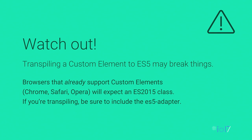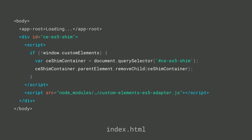One potential foot gun: if you're transpiling your custom elements down to ES5, browsers that natively support custom elements — like Chrome, Opera, and Safari — expect a custom element to be an ES2015 class. Giving them an ES5 object will actually break. So if you're transpiling your entire application and loading it in a browser with native support, you need to include a little ES5 shim. In our project we included a snippet: if the browser has native support for custom elements, it loads the adapter; otherwise the adapter self-removes. This could be packaged into a webpack plugin.